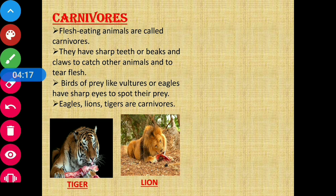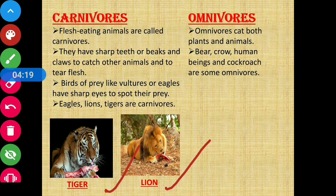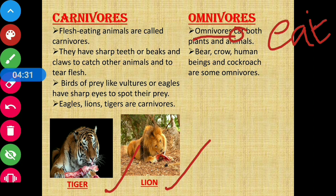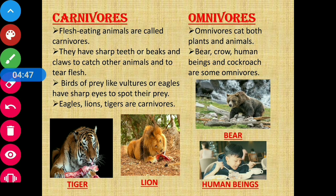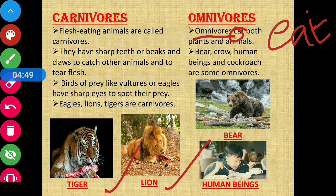Moving on to omnivores — omnivores eat both plants and animals. Examples of omnivores include bear, human beings, and cockroaches. Here you can see I have given the picture of bear and human beings.